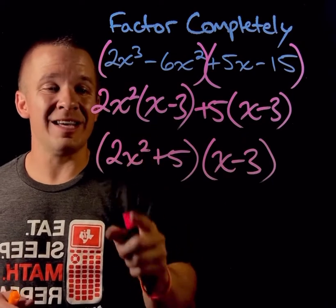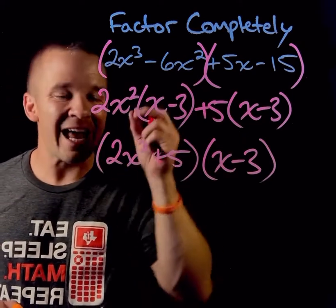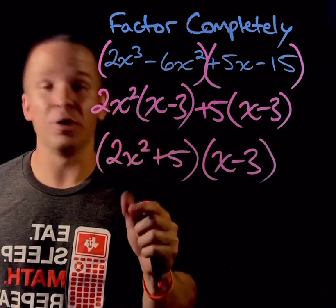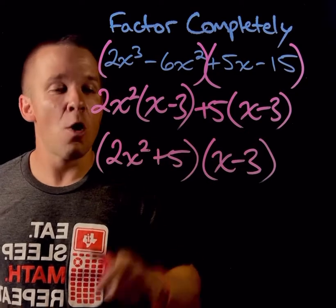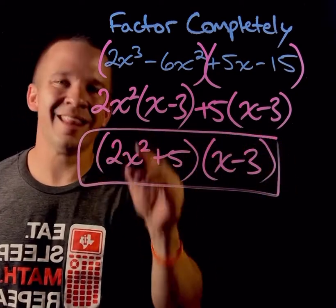So the last thing we got to look for is, is this guy right here going to be factorable? If it has an exponent of 2, there is a possibility that it's going to be factorable. It's like a difference of two squares or something like that. Well, this one is not. So that's it. We are finished with this problem.